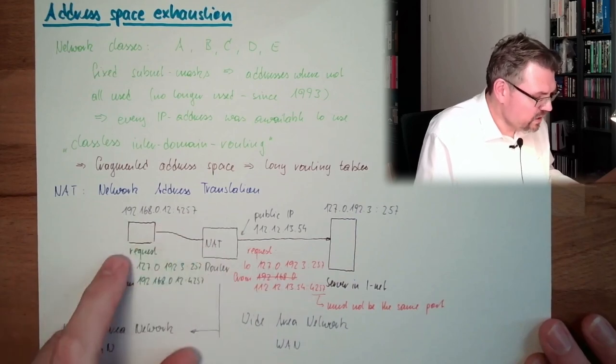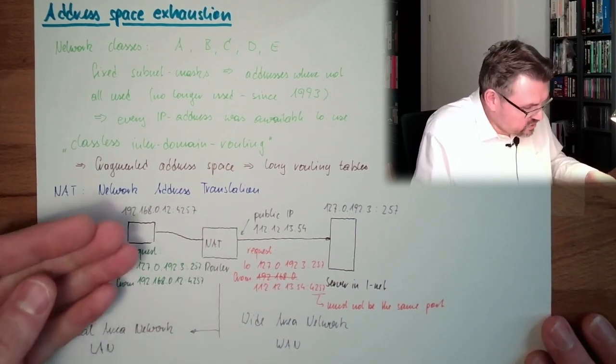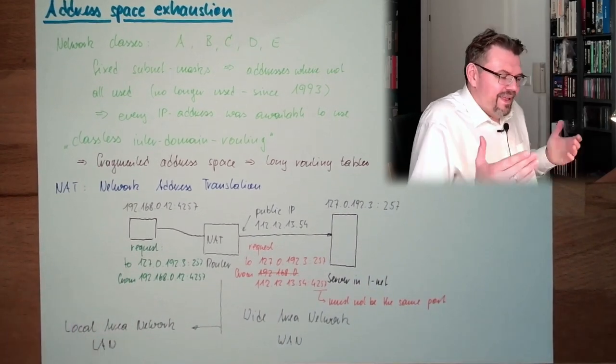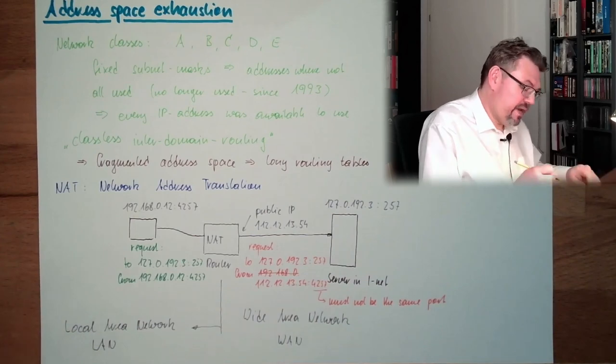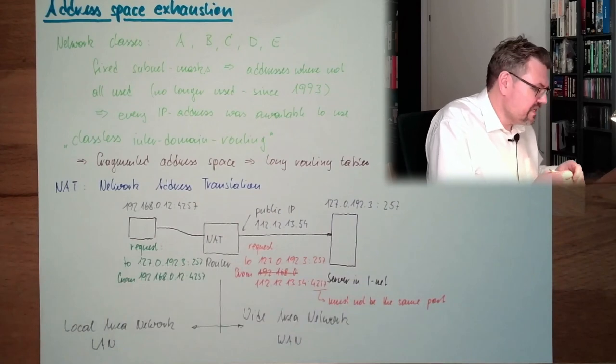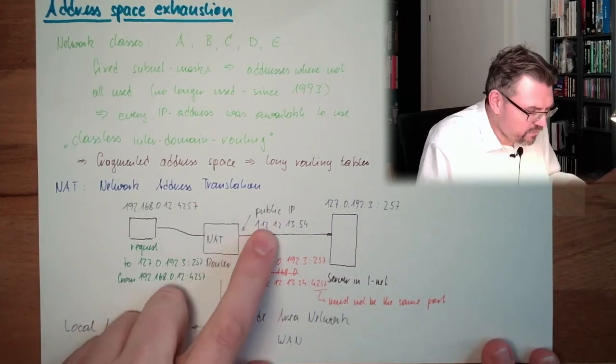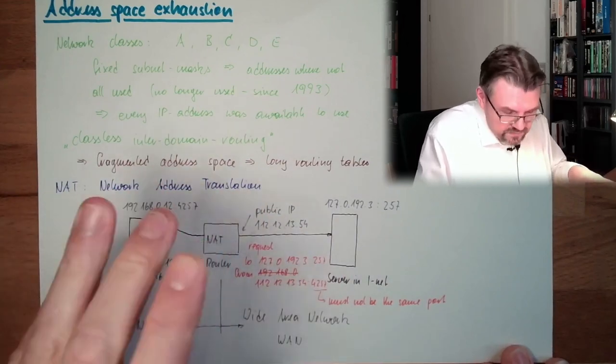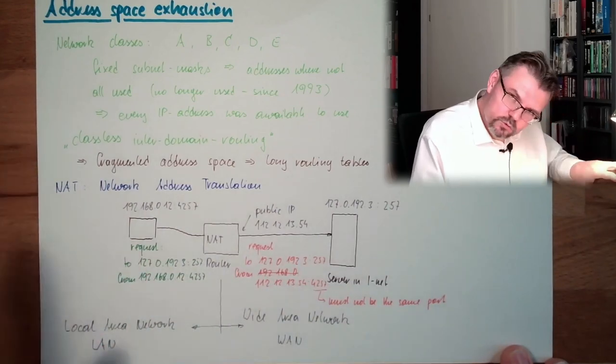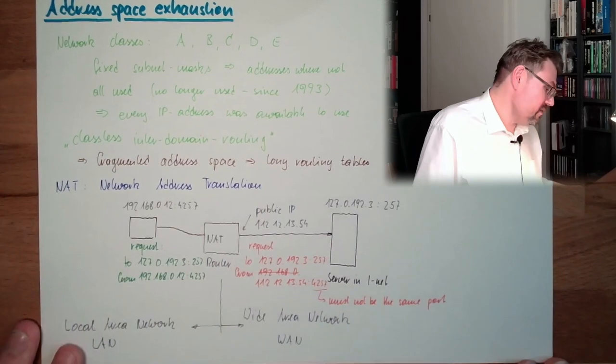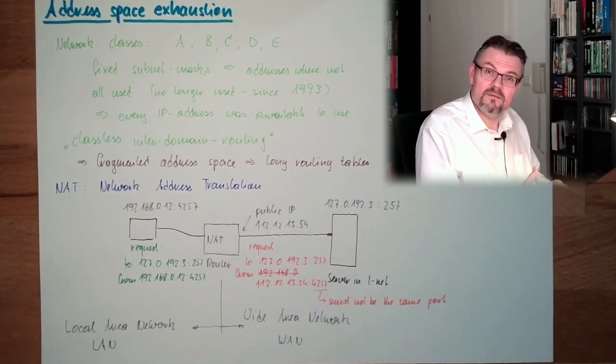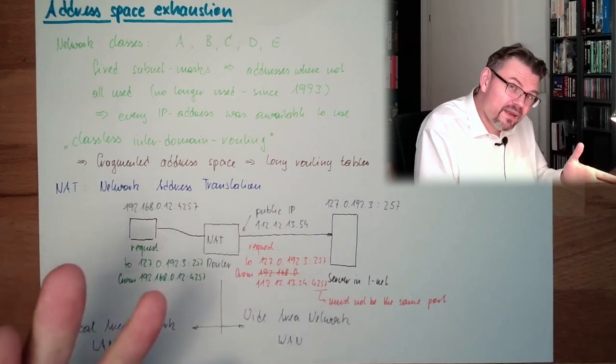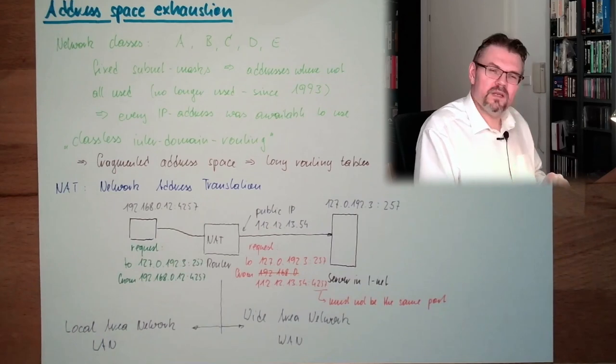This is called source network address translation, because the source is translated into another network. Often sold as a benefit, a security benefit, that those computers are not directly reachable from the outside, because outside we only have this IP address. And what is inside, nobody on the outside knows, just the router. If somebody is hacking the router, let's imagine it's not hacked. So from the outside we will not be seen. What if we want to operate a server or something like this in here? What then? How is this working?